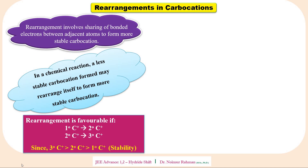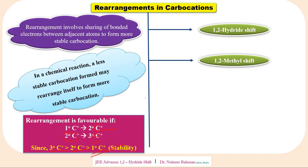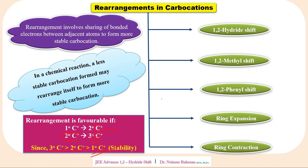Rearrangements are often found in carbocations if there is a possibility of formation of a secondary carbocation from a primary carbocation, or a tertiary carbocation from a secondary carbocation, since tertiary carbocations are more stable than secondary, which in turn are more stable than primary. Rearrangements in carbocations can be broadly classified into five types: 1,2-hydride shift, 1,2-methyl shift, 1,2-phenyl shift, ring expansion, and ring contraction. Today we are going to learn about 1,2-hydride shift in detail.